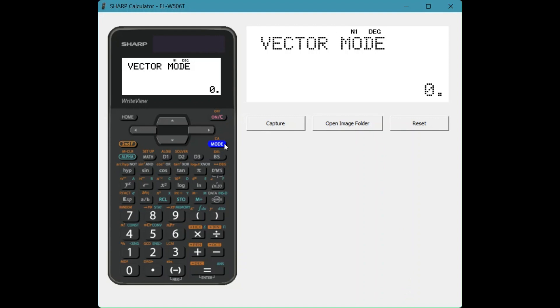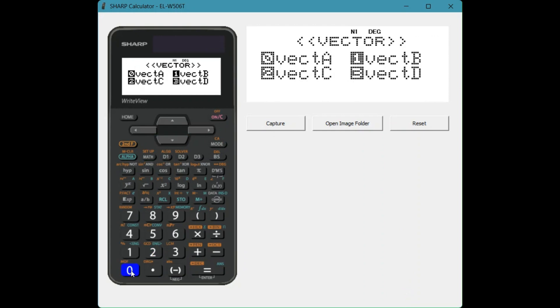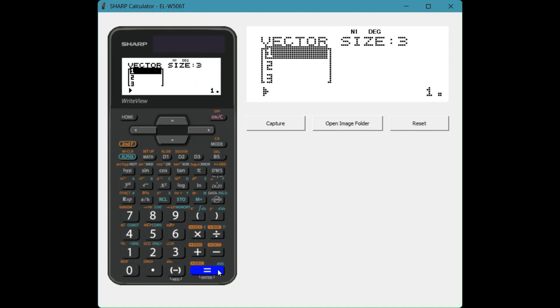To check that we've got the correct vector, we're just going to say math, and then zero for vector, zero for vector A, and equals, and that will show us our vector.